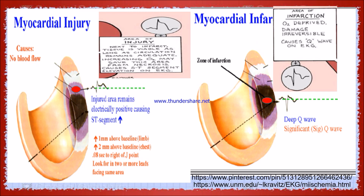The pathological Q wave denotes that the patient had a previous myocardial infarction. The deep Q wave occurs due to the absence of electrical activity — the infarcted area is electrically dead. When there is infarction, the tissue is replaced by fibrous scar, and the patient will have ST elevation and T wave inversion.